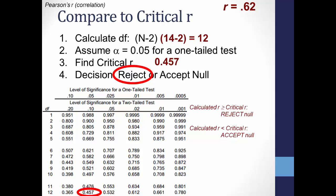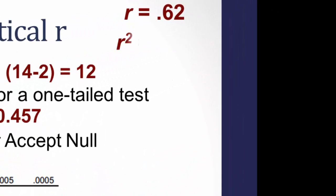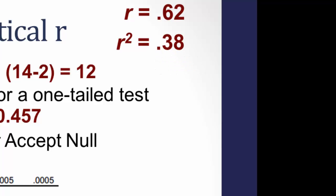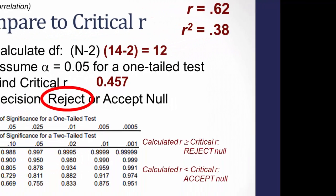We talked earlier about r squared, which is Pearson's r squared. This refers to what percent of the independent variable x — in this case, number of hours studying — explains what happens to the dependent variable y, or score on the exam. In this case, this positive correlation explains about 38% of the variation. Remember that the closer r squared is to 1, the better x explains y.